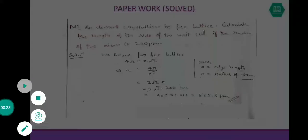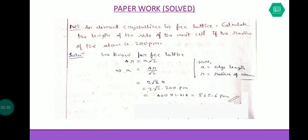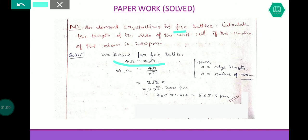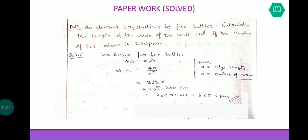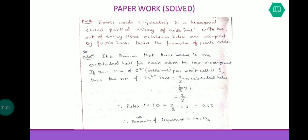In the last video I gave you some paperwork to do. These are the solutions. The first question was: an element crystallizes in FCC lattice — calculate the length of the side of the unit cell if the radius of the atom is 200 picometers. Since the crystal lattice is FCC, the relation is 4r = a√2, so a = 4r/√2. Put the value of r and you directly get the answer.